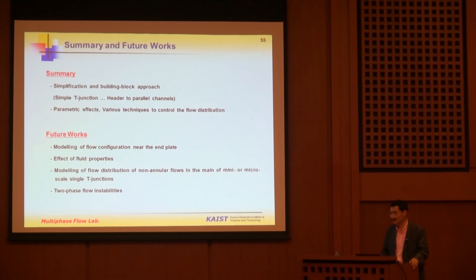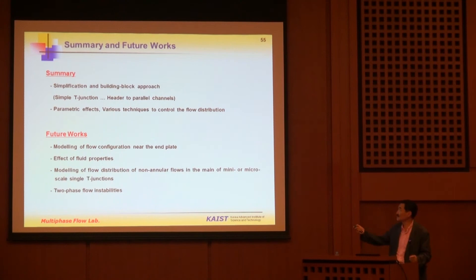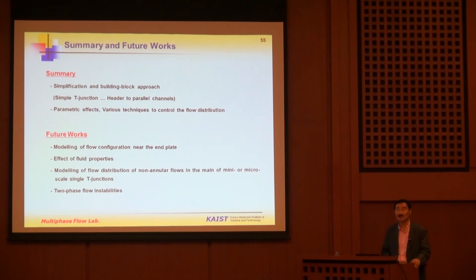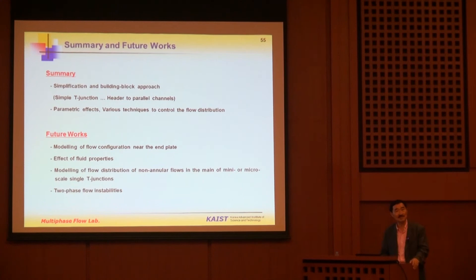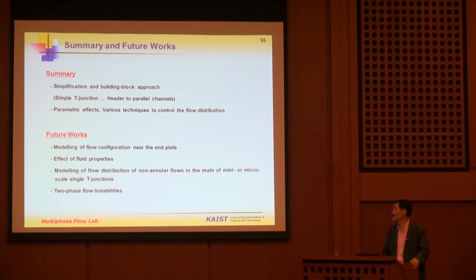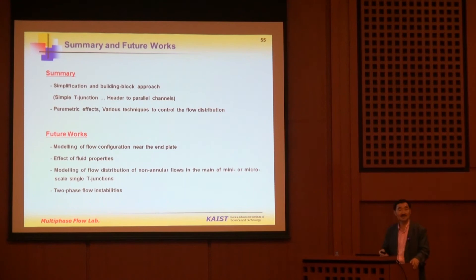In summary: we discussed a building-block approach, starting from single T-junctions, then two consecutive junctions, then header-to-parallel-channels configurations, then parametric effects and various techniques to achieve uniform flow distribution. What remains to be done: modeling near the end plate is still problematic; fluid property effects (especially capillary effects at small scale) are important; non-annular flow cases at small T-junctions need further investigation; and two-phase flow instability must be considered seriously.